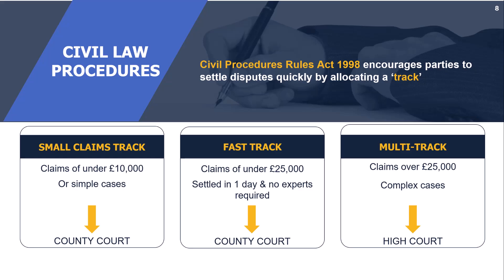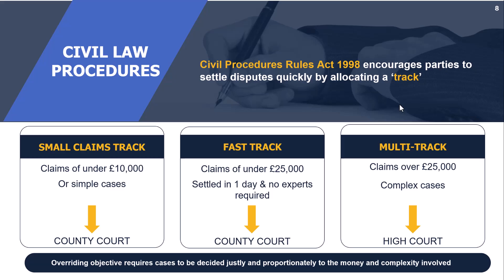In a small claims case — for example, suing a customer for an unpaid invoice — you go to the county court, it's a quick decision, no formality, and you don't even need a lawyer. You'd bring a copy of the invoice and proof of delivery. On the fast track, you get a full day and are told what documentation to prepare in advance so court time isn't wasted. On the multi-track, the judge decides how to run the case, setting deadlines and required documentation depending on the complexity involved.